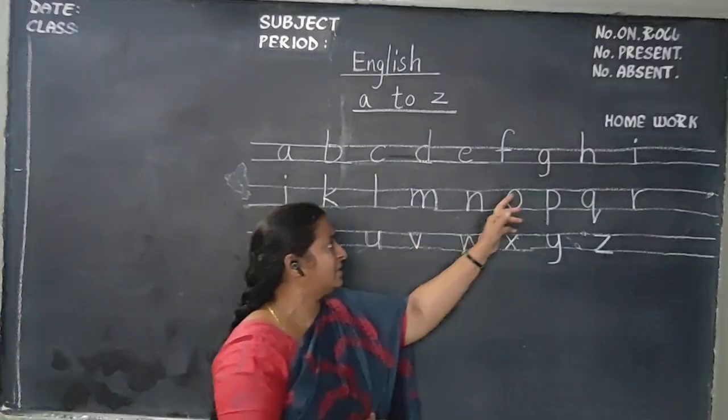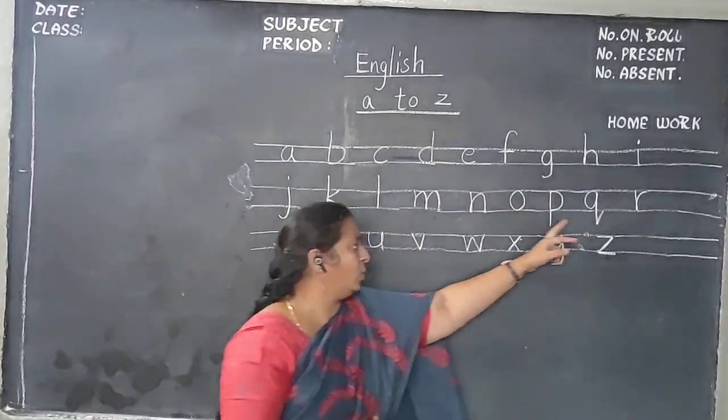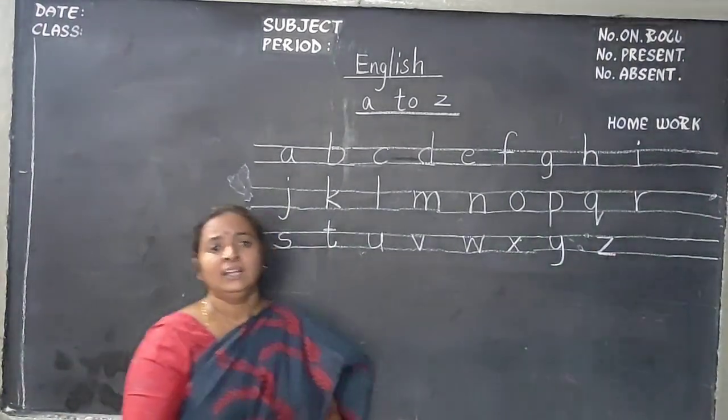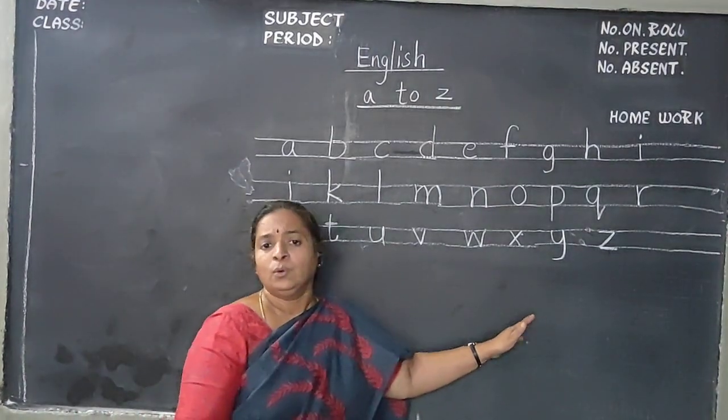Now, downward letters. Down zone letters. See. G, J, P, Q, Y. See these are. They start from the middle zone and come towards down zone.